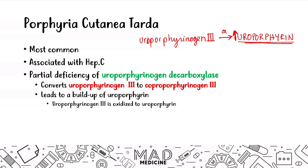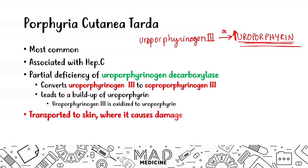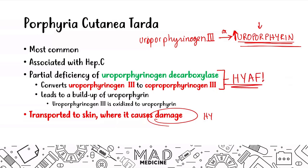You're going to have an overproduction of uroporphyrin, and this will become deposited in the skin, causing damage. To summarize: the defective enzyme is uroporphyrinogen decarboxylase, the lack of conversion of uroporphyrinogen 3 to coproporphyrinogen 3 leads to an increase in uroporphyrin — all very high yield for porphyria cutanea tarda.